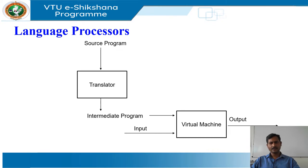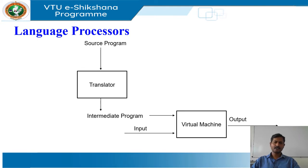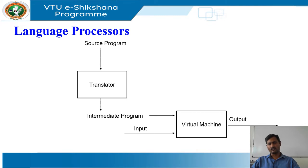A hybrid compiler is another language processor which accepts the source program, maybe in a bytecode format. This intermediate program along with input data is fed as the input to the virtual machine and the output can be obtained. An assembler is a language processor which accepts assembly level language as its input and produces the target language as its output. A linker is used to resolve external memory references and a loader is used to load the executable file onto main memory.